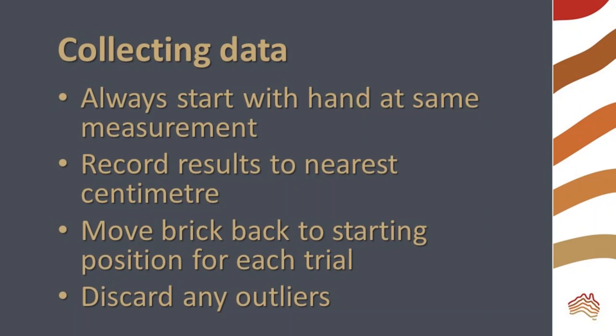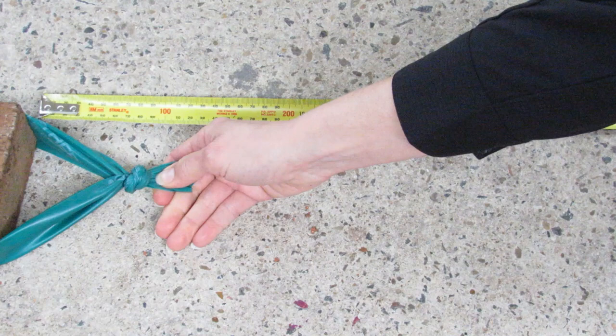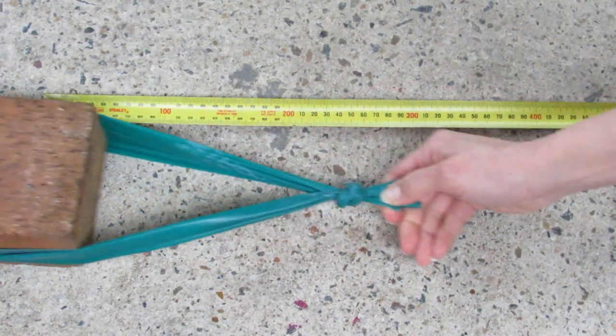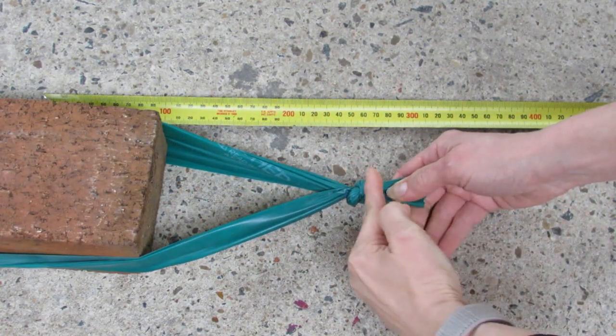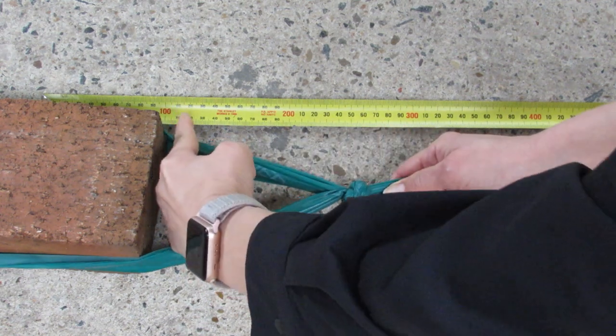When collecting data in the experiment, always start with your hand at the same measurement where there's no stretch. Record results to the nearest centimeter. Move the brick back to the starting position for each trial and be sure to discard any outliers in your data.